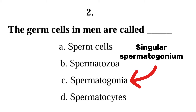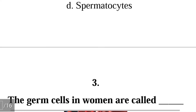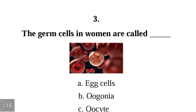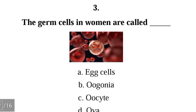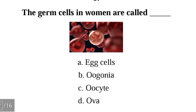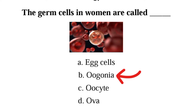Question 3: The germ cells in women are called — A. egg cell, B. oogonia, C. oocyte, D. ova. The correct answer is B, oogonia. Oogonia are the germ cells found in women; the singular is oogonium.